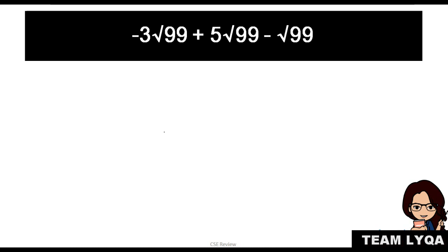Example, let's make it a bit harder. So number 4 in the workbook. This is a bit more complicated because there are figures, numbers, and there are things you can do inside. So you have negative 3 square root of 99 plus 5 square root of 99 minus square root of 99.